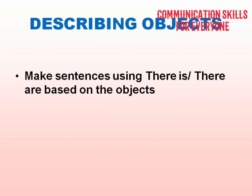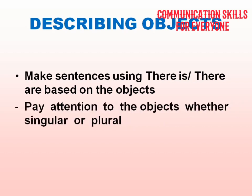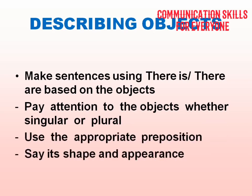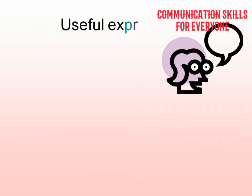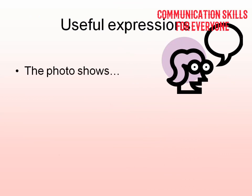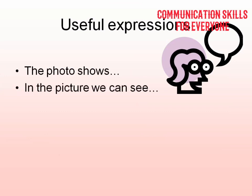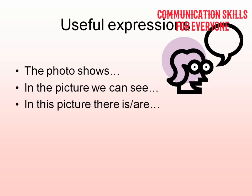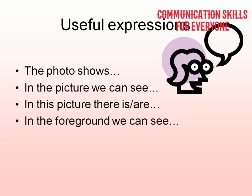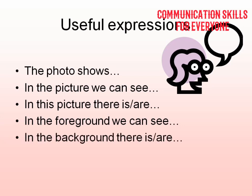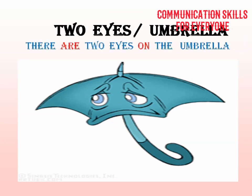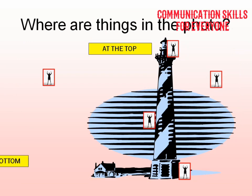When describing objects, make sentences using 'there is' or 'there are' based on whether objects are singular or plural. Use appropriate prepositions and describe shape and appearance. Useful expressions include: 'the photo shows,' 'in the picture we can see,' 'in this picture there is/there are,' 'in the foreground we can see,' 'in the background we can see.' For example: there are two eyes on the umbrella.